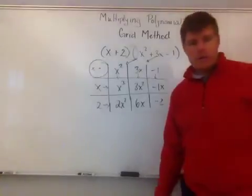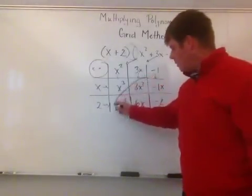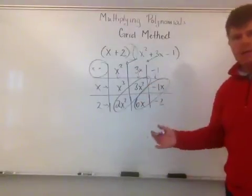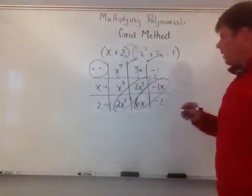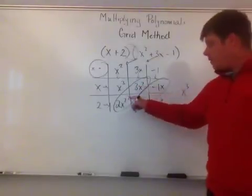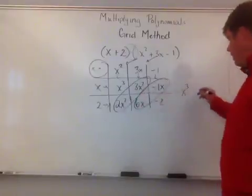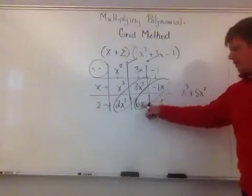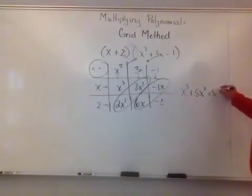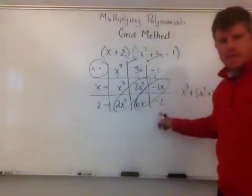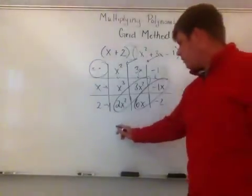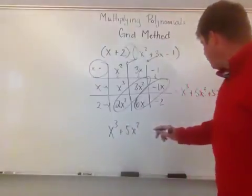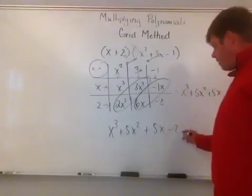Now, you might start to notice some patterns within your box, but if you notice here, notice that my like terms are always on a diagonal. So if I wanted to, I could simplify right from this box and go, okay, I have an x cubed. I have a 3x squared and a 2x squared. Well, 3x squared and 2x squared really makes my 5x squared, so that's 5x squared. And I have a negative x and a positive 6x, which makes positive 5x. And then I just have a negative 2, which doesn't have any other like terms, or minus 2. So I'm just going to write this down below. So I have x cubed plus 5x squared plus 5x minus 2.